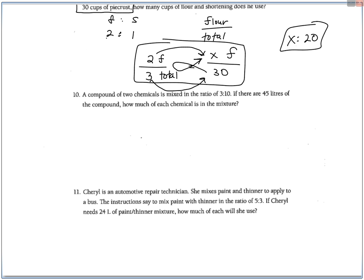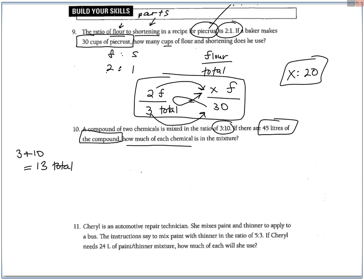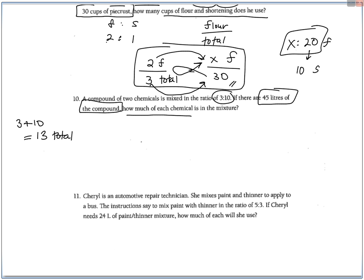I think these problems will be similar. A compound of two chemicals is mixed in the ratio of 3 to 10 if there are 45 liters of the compound. So again, we need to take those two parts and add them up, 3 plus 10. Again, this ratio 3 to 10, you have to add them up to get 13, that's the total, because the 45 liters of the compound is a total. So how much of each chemical is in the mixture? This reminds me, up above, it says how many cups of flour and shortening does he use? So if he uses 20 cups of flour, the other missing piece is 10, which has to add up to 30. So it's 20 cups of flour, 10 cups of shortening. So I forgot to solve that above.